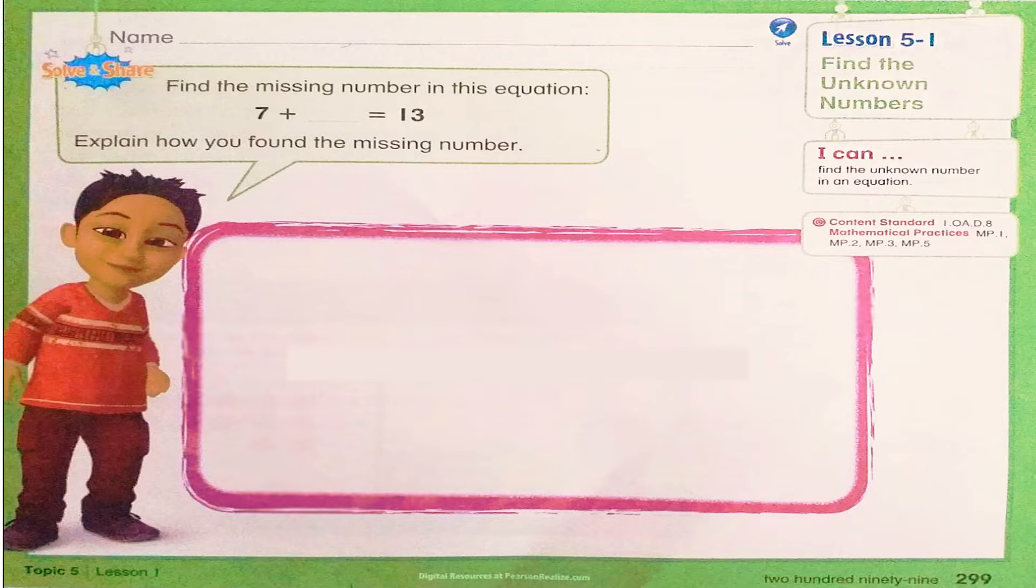You can use counters to help you solve this problem. Now, let's find the missing or the unknown number in this equation. 7 plus an unknown number equals 13. I have to put the first addend in my head and count on till 13. We'll start with 7.